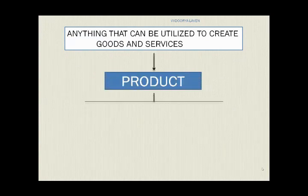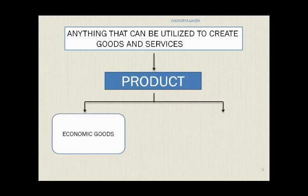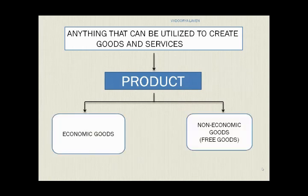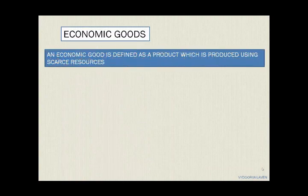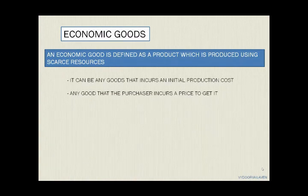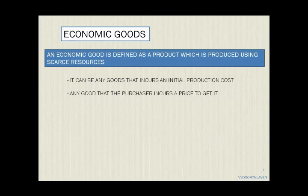In economics, products can be broadly classified into economic goods and non-economic goods. An economic good is defined as a product which is produced using scarce resources. One of its main features is that it incurs an initial production cost, meaning an initial value of capital is invested to undergo the production process.